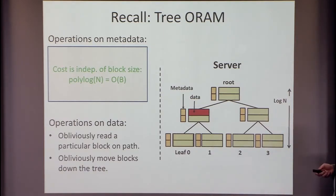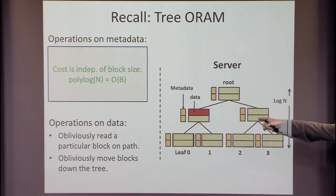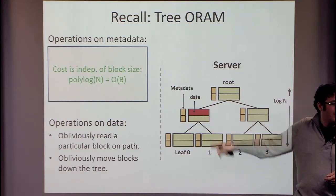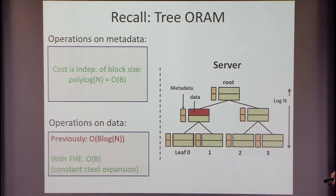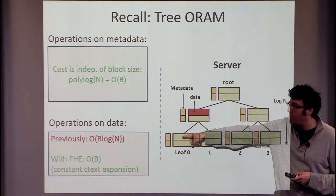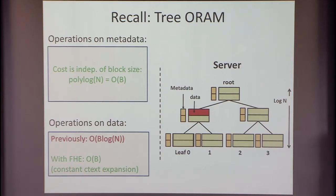The metadata I'm going to read the same as before. Once I read the metadata, I know exactly where I want to move data around and which data — so during a read, I know exactly which data block I actually want to read. To do the operation on the data, I'm just going to use homomorphic operations. Previously I would read all of it: that would be B log N work where B is the block size. Now with something like FHE — or we'll see, we don't actually need FHE — with some homomorphic computation, this will be just on the order of the block size.